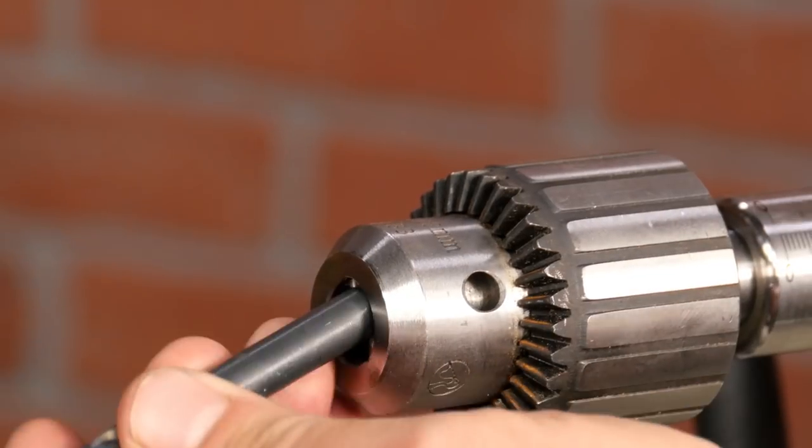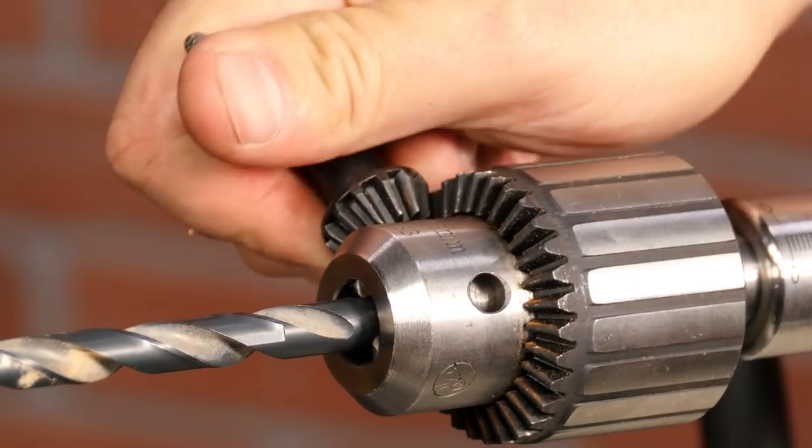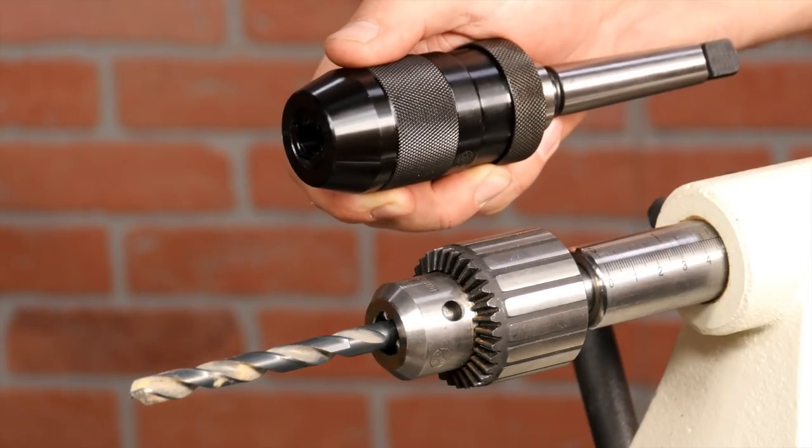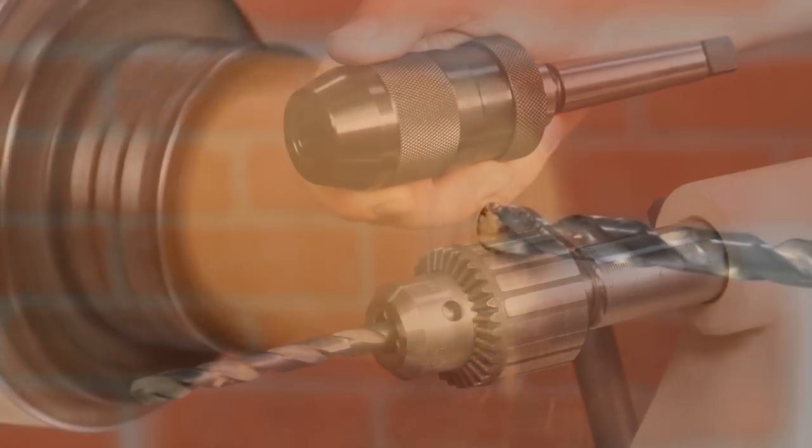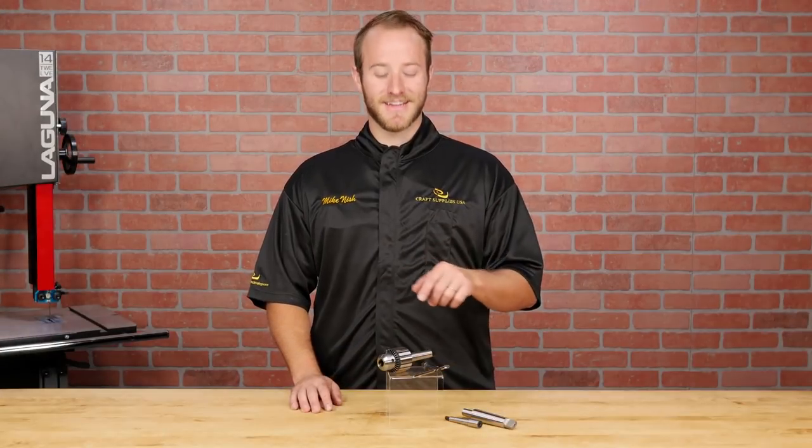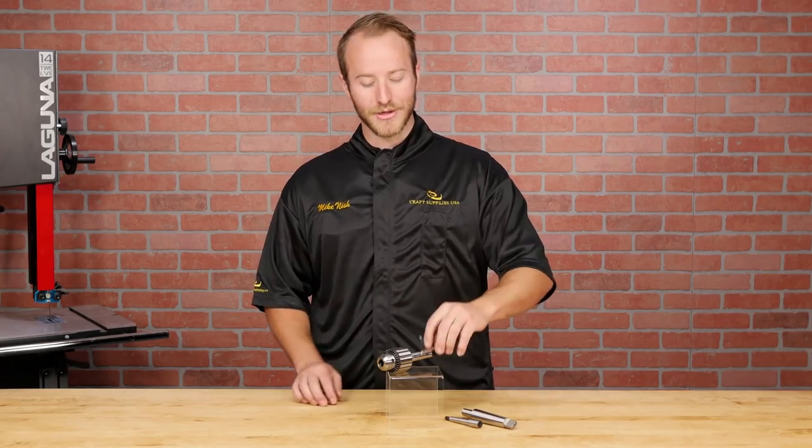Because it uses a key to tighten, you can get a serious amount of torque on your drill bits and projects. It also has a smaller overall body than the keyless, so it will give you more space to drill on many lathes. The only downside to this drill chuck is the tightening key is easy to misplace. However, we do offer replacements.